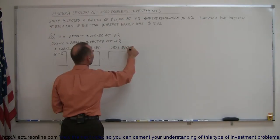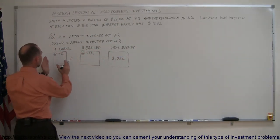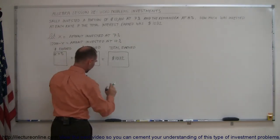We were told in the problem that the total earned was $1,032. So the amount of dollars earned at 7% plus the amount earned at 10% equals the total amount earned.